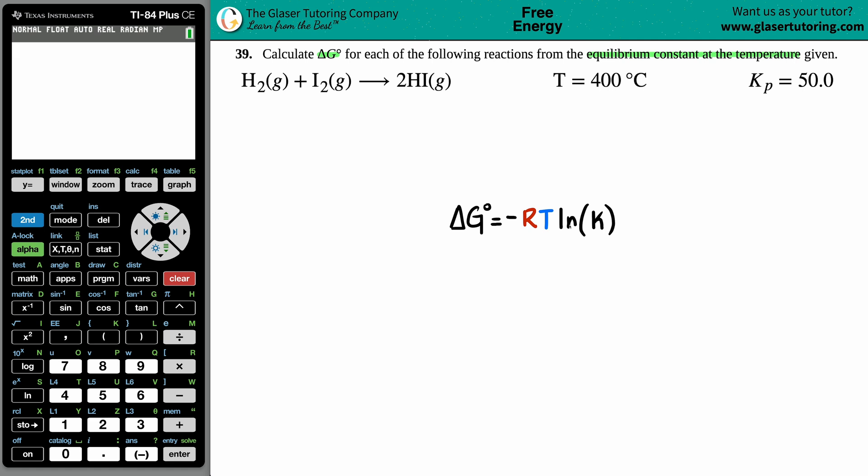There's Ka, Kb, Kc, Kp, Ksp—doesn't matter, it just has to be an equilibrium constant. So we're calculating that ΔG°, which means that we should know these three variables.